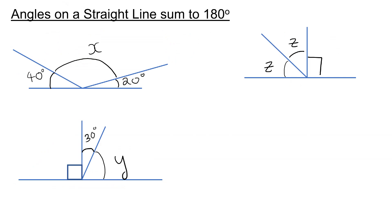Let's have a look at this first property — angles in a straight line add up to 180 degrees. In this first example, if I want to find angle X, I add up the two angles that I know: 40 and 20, which is 60. And I subtract that from 180, which gives me 180 take away 60, which is 120 degrees. So X is equal to 120 degrees.